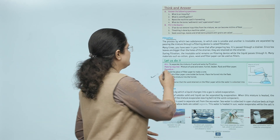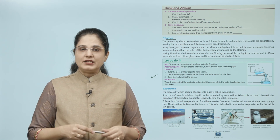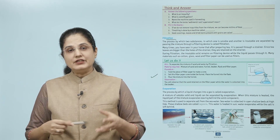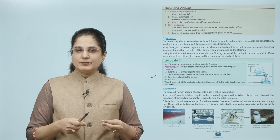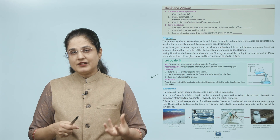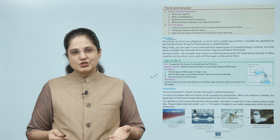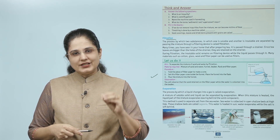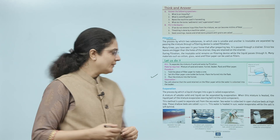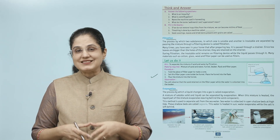Let us do it. Aim: to separate the mixture of sand and water by filtration. Materials required: mixture of sand and water, funnel, beaker, flask, and filter paper. Procedure: fold the filter paper to make a cone; set this cone inside the funnel; place the funnel into the flask; pour the mixture into the funnel. Observation: the sand is retained on the filter paper while water is collected in the beaker.